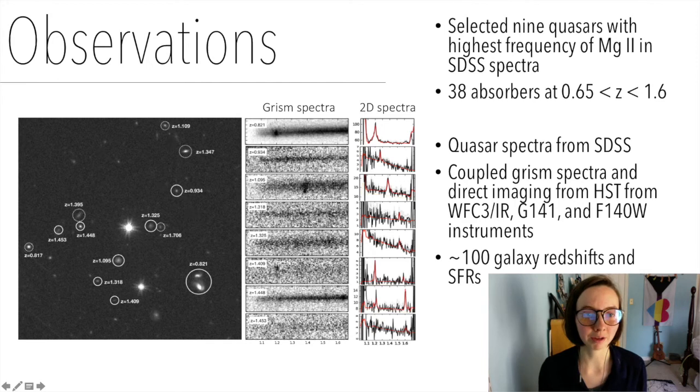Cold, metal-rich CGM can be traced by foreground magnesium-2 absorption in quasar sightlines. We targeted the nine quasar spectra in the Sloan Digital Sky Survey with the highest incidence of intervening magnesium-2 absorption in order to target a large sample of absorbers with high efficiency. We restricted our absorber sample to a redshift range of 0.65 to 1.6, the range in which H-alpha emission is observable in the G141 GRISM setting of the Hubble Space Telescope.